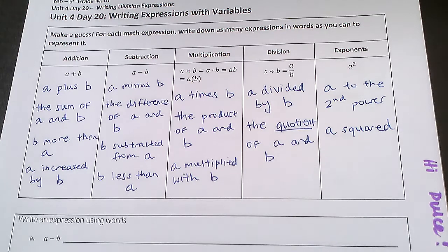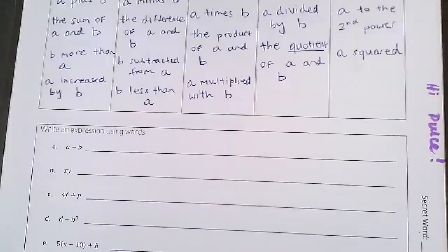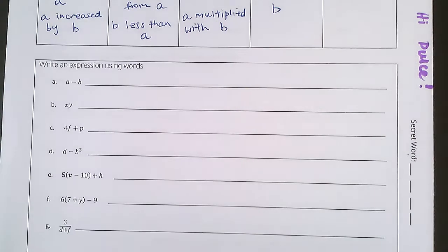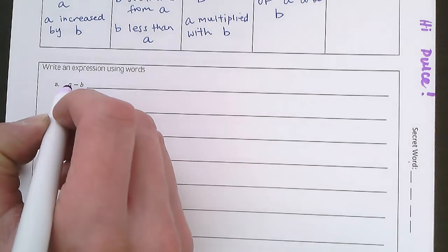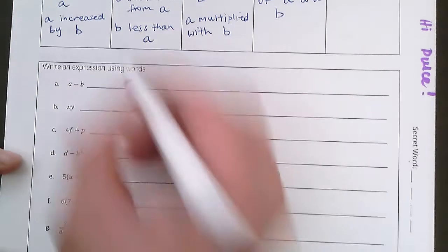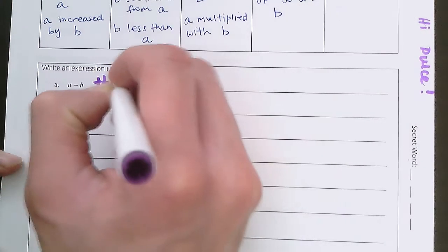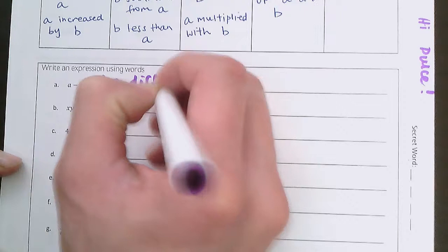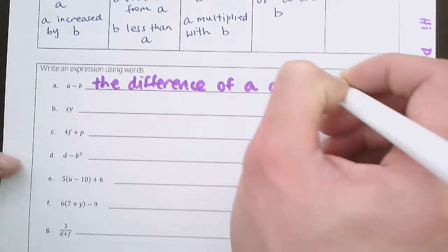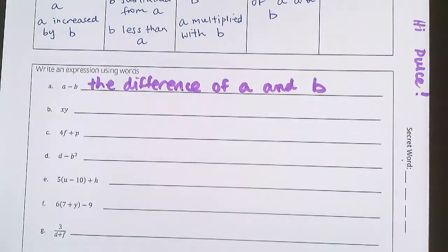Now what we're going to do is put all of this together and start translating some mathematical variables, numbers, and operations into words. So here we have a minus b. We can say this as the difference of a and b. Or if you write it as a minus b, that's acceptable too.